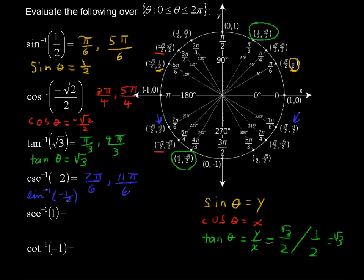Inverse secant of 1. That's like saying: where is the inverse cosine of 1, taking the reciprocal — because secant is the reciprocal of cosine. So where do we see an x value of 1? We see it right here, and that's the only place we see it. So the inverse secant of 1 is 0 radians and 2π radians.